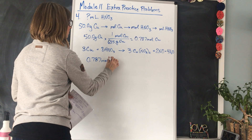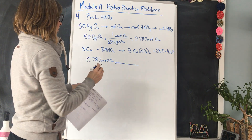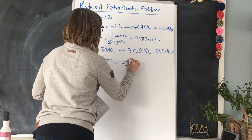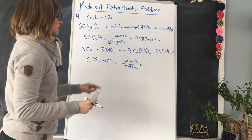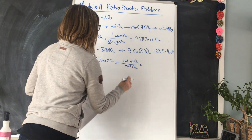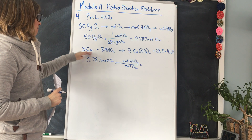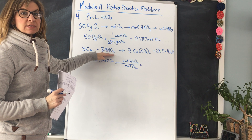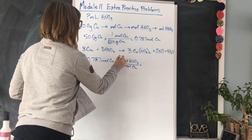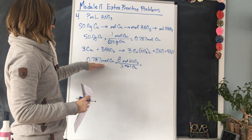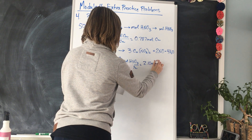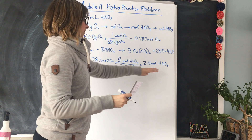We have 0.787 moles of copper. Put moles of copper on the bottom and moles of HNO3 on top. Looking at the stoichiometric coefficients in the balanced equation: for every 3 moles of copper we need 8 moles of nitric acid. So: 0.787 × 8 ÷ 3 = 2.10 moles of HNO3.